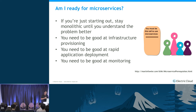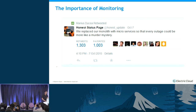Martin Fowler's general guidance is: no, first start with a monolith, then move to a microservice-based architecture. Figure out your business problem, then go from monolith to microservice. Automation and monitoring are prerequisites before you can jump into this. Here was a funny tweet: 'We replaced our monolith with microservices so that every outage could be more like a murder mystery.' That's a consequence of not doing monitoring correctly.